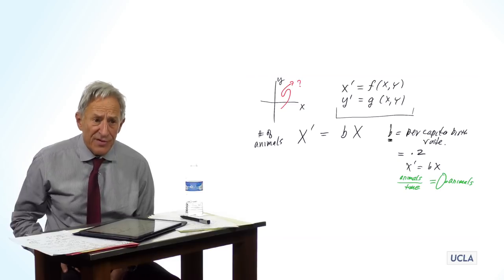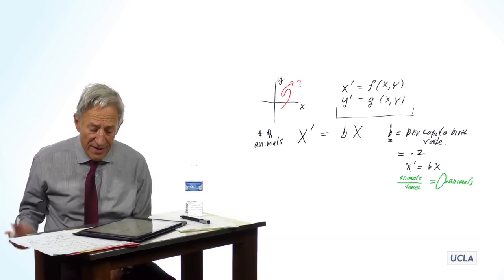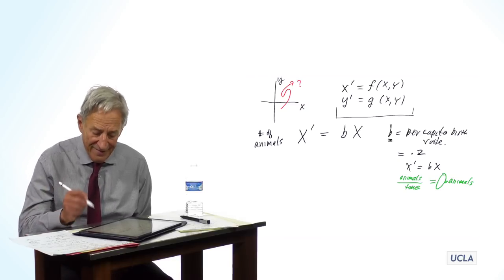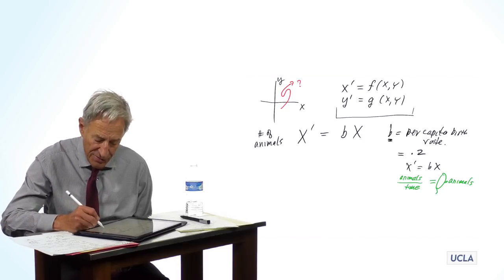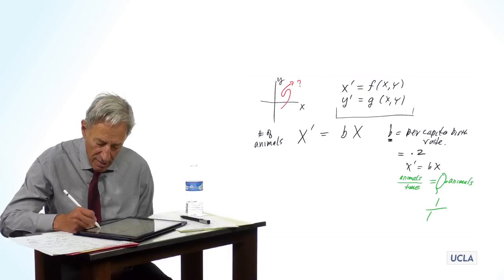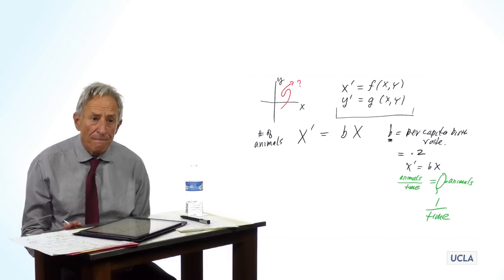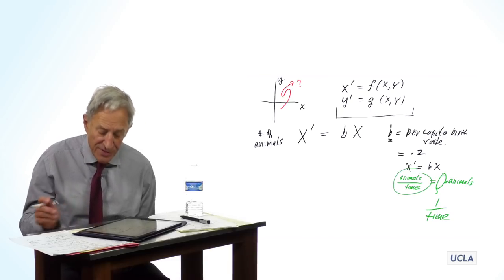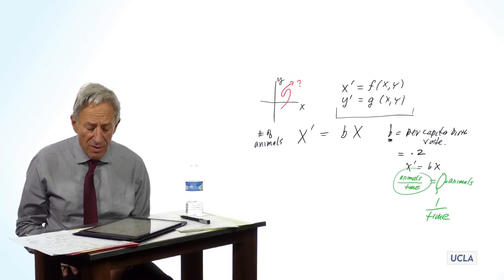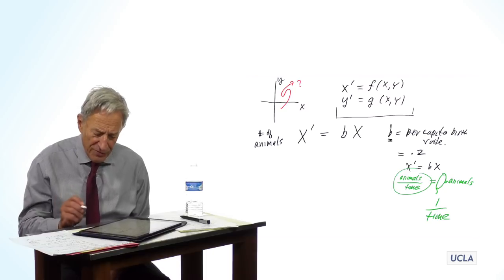So what are the units of b? They are whatever they need to be to make this come out dimensionally. The units of b must be one over time. Because when we multiply it by the number of animals, we need something which is animals per time. So b is one over time.